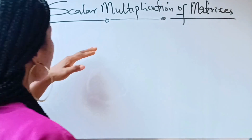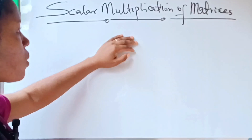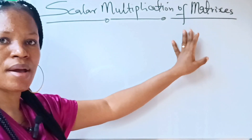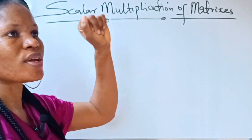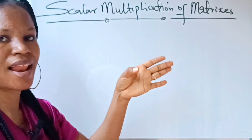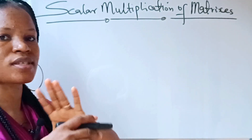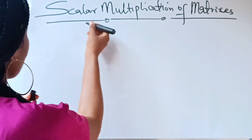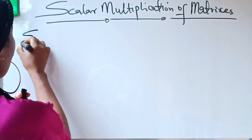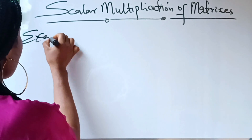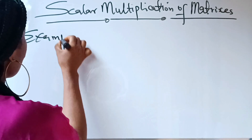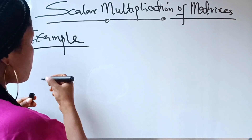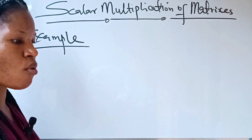Scalar multiplication is very easy — it simply means multiplying a matrix with a scalar. A scalar is just a whole number. Let's go in with an example.